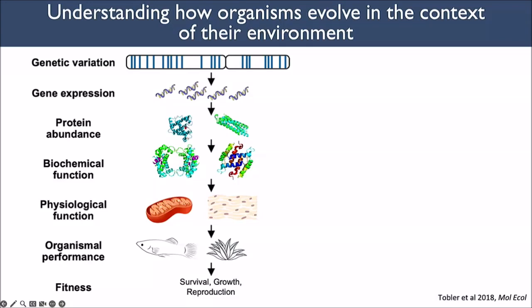We can think about all of the hierarchical levels going from genetic variation to gene expression, to protein abundance, biochemical function, physiological function, organismal performance in some kind of environment, and then ultimately fitness. We draw this beautiful linear progression across these hierarchical scales, but in reality this is non-linear — there are non-linear connections between genetic variation to biochemical function, from genetic variation to abundance. We really need to think about integrating from genetic variation to fitness across these levels in different ways.